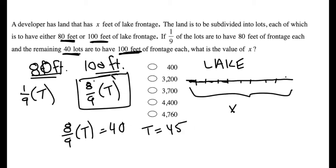So I have 40 hundred-foot lots, and by the remainder then, must be five, or one-ninth of 45. So 40 hundred-foot lots and five 80-foot lots.